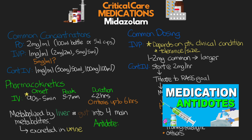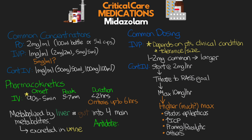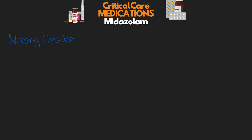As for the antidote, we do have one for midazolam — flumazenil, also known as Romazicon. The dose is 0.2 mg IV push.